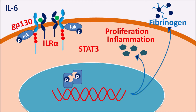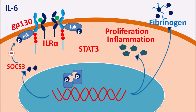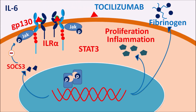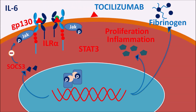This gene transcription can also release the mediator SOCS-3, a suppressor of cytokine signaling, which controls the JAK and STAT pathway so that excessive inflammation is controlled. However, during cytokine release and in autoimmune disorders, this negative feedback mechanism is not working properly, resulting in excessive inflammation. Tocilizumab, as an IL-6 receptor antagonist, binds to these IL-6 receptors, thereby inhibiting the action of IL-6 and resulting in decreased inflammatory response.